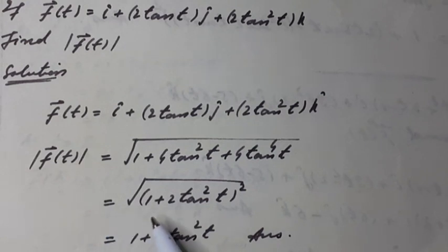It can be written as square root of 1 plus 2 tangent squared t whole squared, which equals 1 plus 2 tangent squared t. Answer.